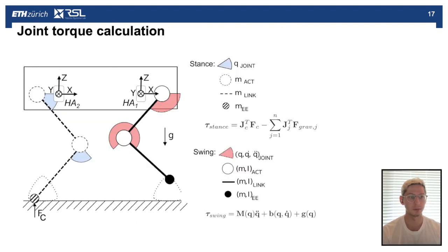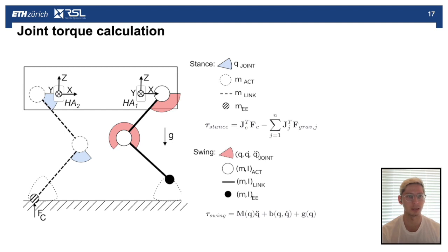Looking at the hind leg which is in stance phase, you can see there's a ground reaction force fc. For the hind leg we calculate the stance phase torque by projecting this force fc onto the joints, which we do using the Jacobian. We neglect the joint velocity and acceleration but include the mass of the joints and the actuators in the static analysis to calculate the joint torque.